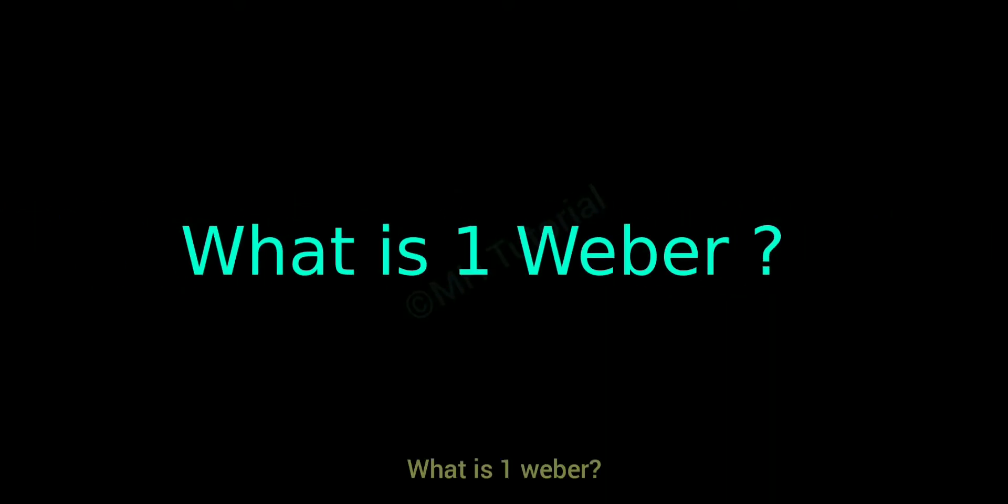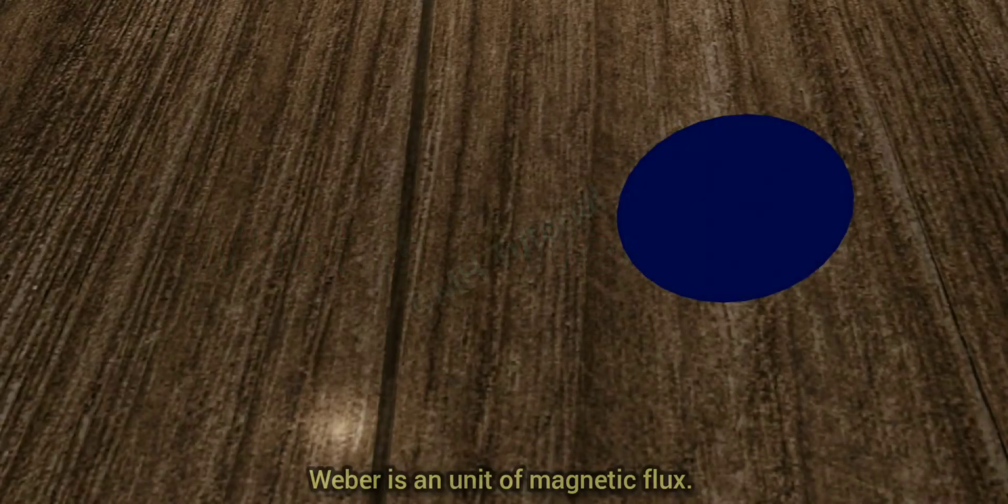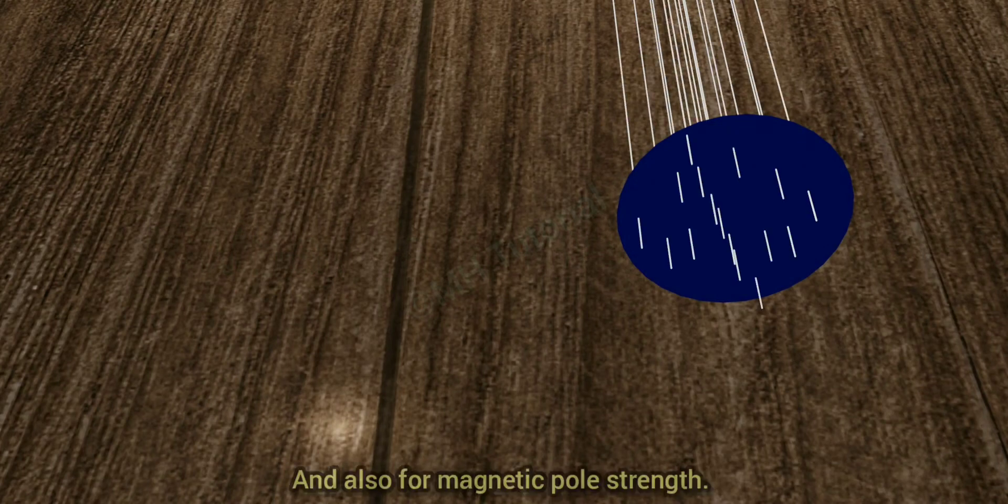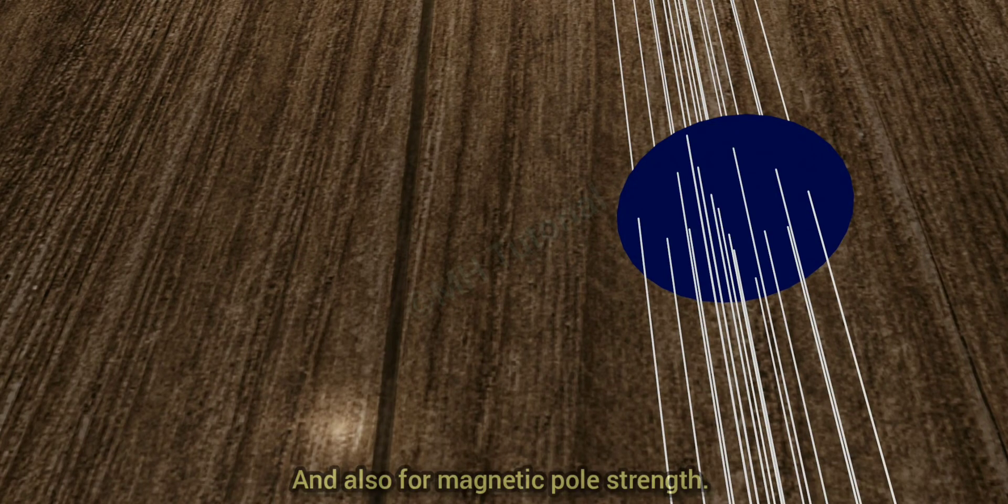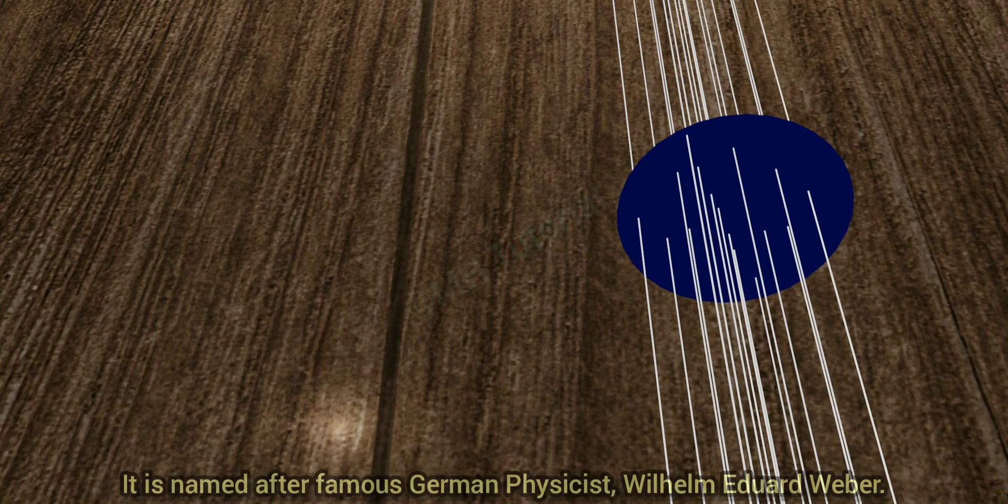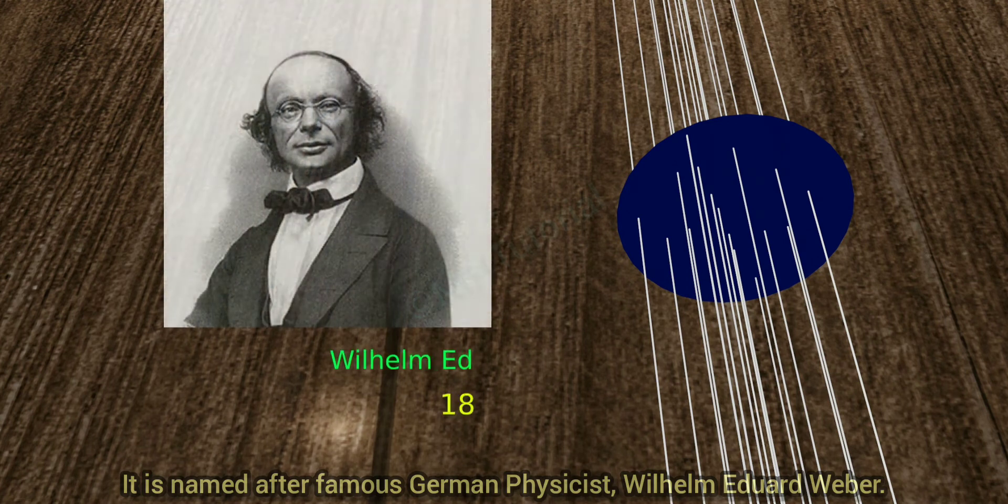What is one Weber? Weber is a unit of magnetic flux and also for magnetic pole strength. It is named after famous German physicist Wilhelm Eduard Weber.